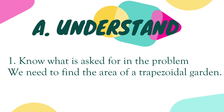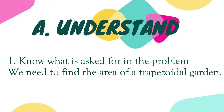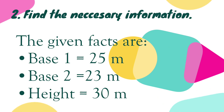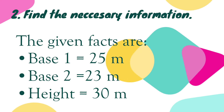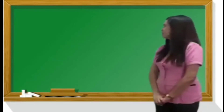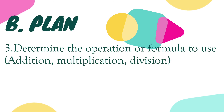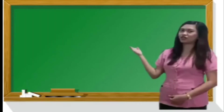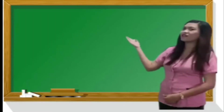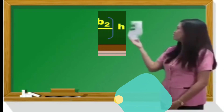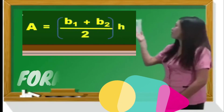Find the necessary information. Step 2 — the given facts are: Base 1 = 25 meters, Base 2 = 23 meters, Height = 30 meters. Next is Plan: Determine the operation or formula to use. Based on the problem, the operations are addition, multiplication, and division. The formula is: Area = (Base 1 + Base 2) ÷ 2 × Height.